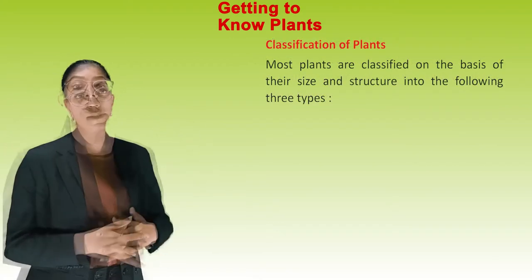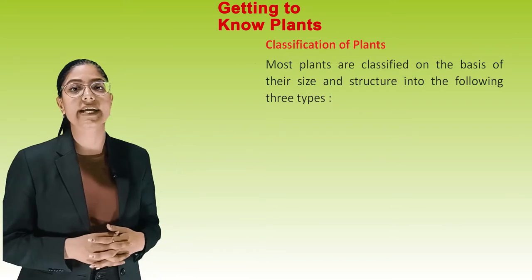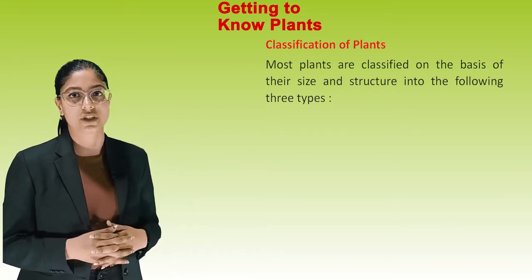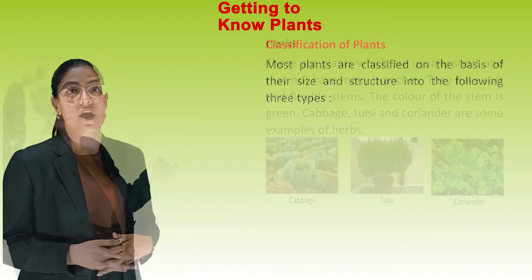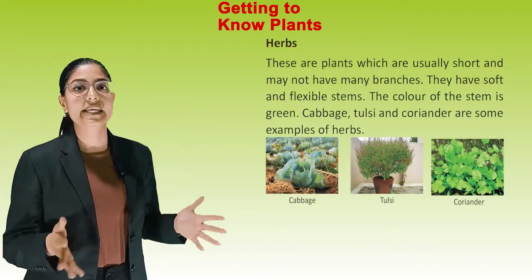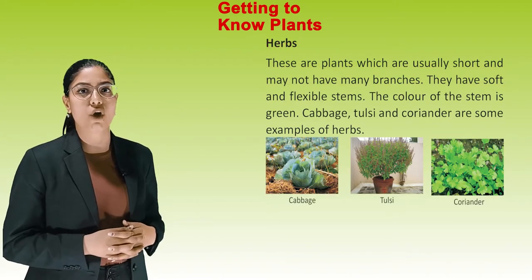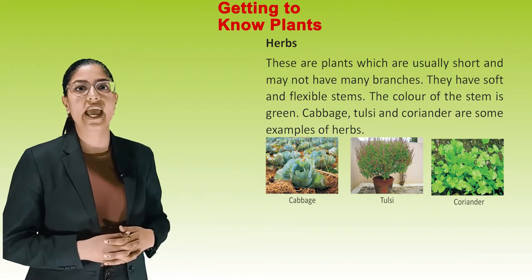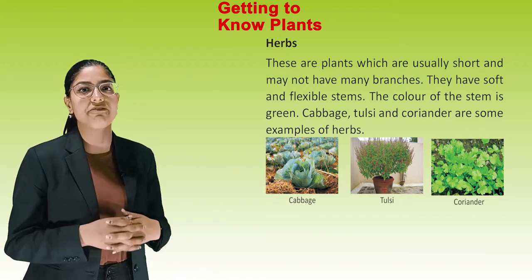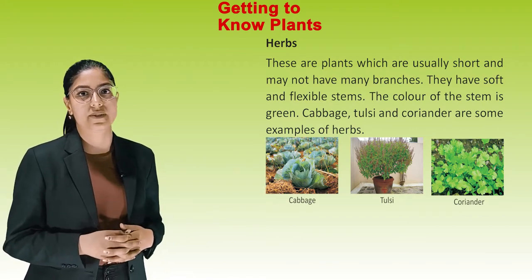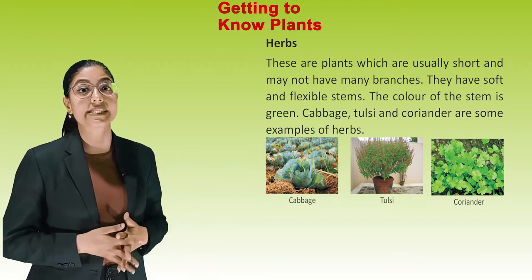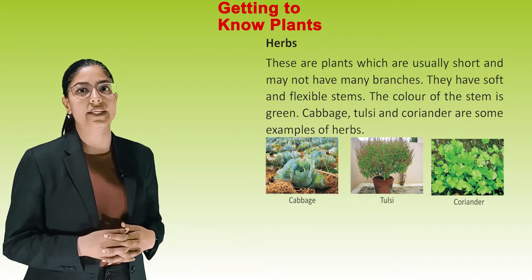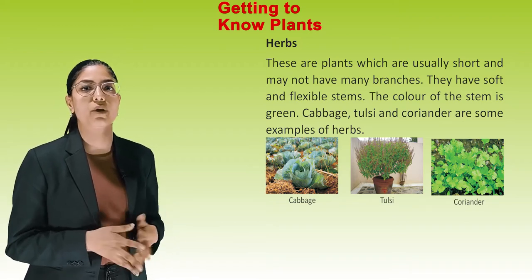Classification of Plants: Most plants are classified on the basis of their size and structure into three types. First, Herbs — these are plants which are usually short and may not have many branches. They have soft and flexible stems. The color of the stem is green. Cabbage, Tulsi and Coriander are some examples of herbs.